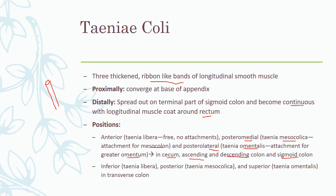These positions of the teniae are present in the cecum, the ascending colon, the descending colon, and the sigmoid colon. What happens in the transverse colon is that the intestine gets twisted on itself. As we go from the cecum to the ascending colon and into the transverse colon, a twist has occurred, so the positions of the teniae also change.